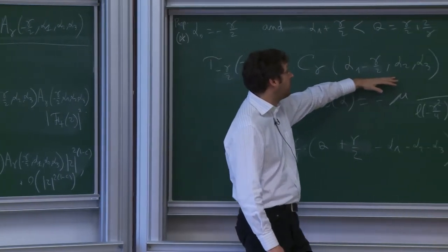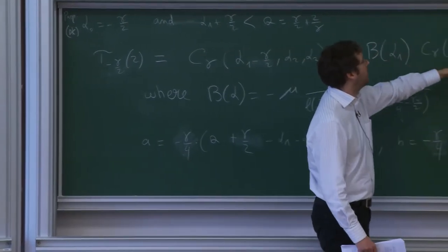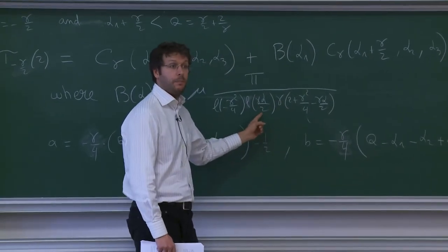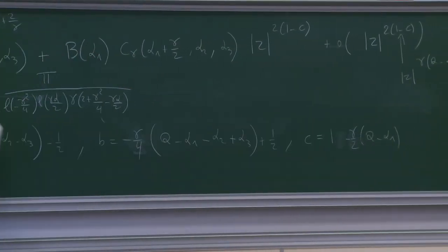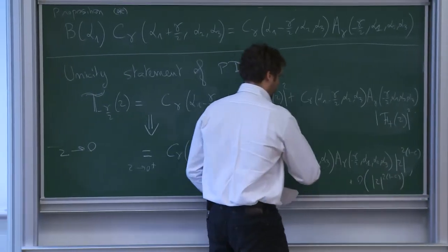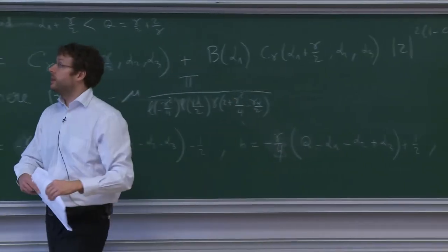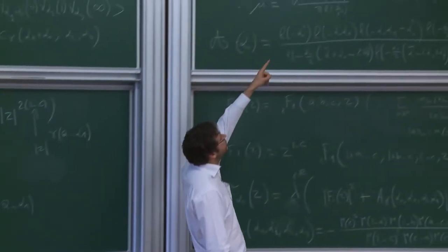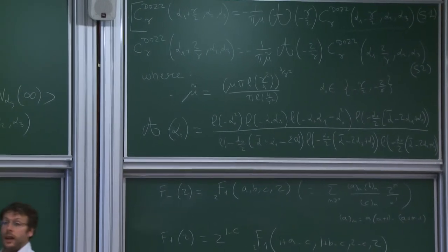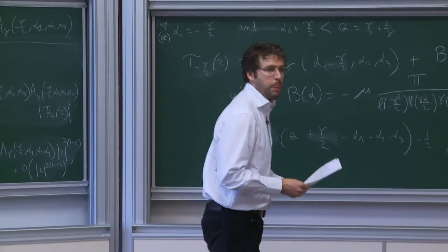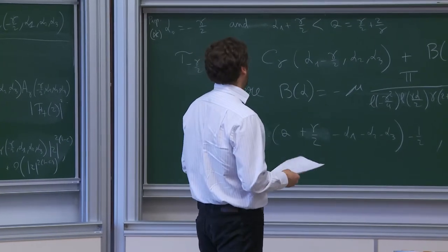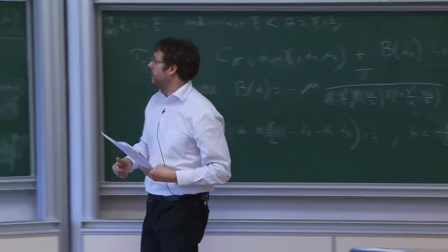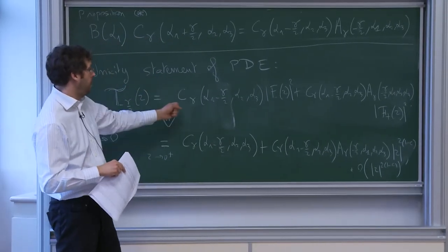What I do is derive this expansion directly in a probabilistic setting, finding the proposition: when I do an asymptotic expansion around 0, I get the three-point correlation function with shift -gamma/2, plus the three-point correlation function with shift +gamma/2 times an explicit function, plus little-o terms. By unicity of the Taylor expansion, the coefficient here equals the coefficient there, and this leads to the relation that is exactly equivalent to shift equation S1.